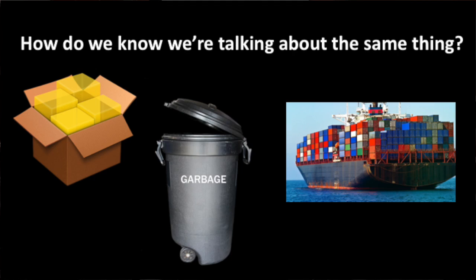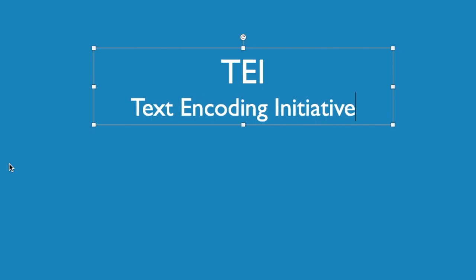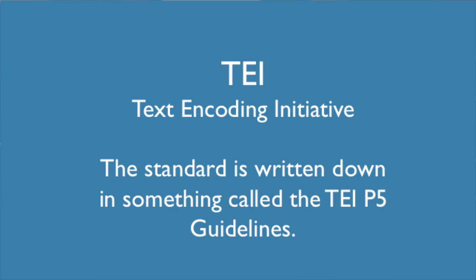So how do we know that when I use the tag 'container' that I mean the same thing as someone else who uses the same container tag? In XML, we don't. Enter the TEI. The TEI stands for Text Encoding Initiative. It's a project of scholars, computer geeks, and people who really, really like to argue.